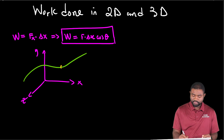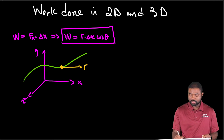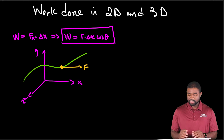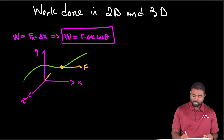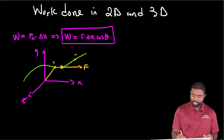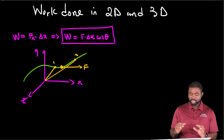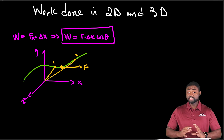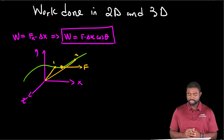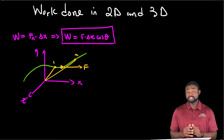Let's say we have a particle here and a force F is acting on the particle in that direction, and the particle moves from point one to another point two. So how do we determine the work done on this particle by the force F? In order to do so, we will utilize a property of vectors known as dot products.